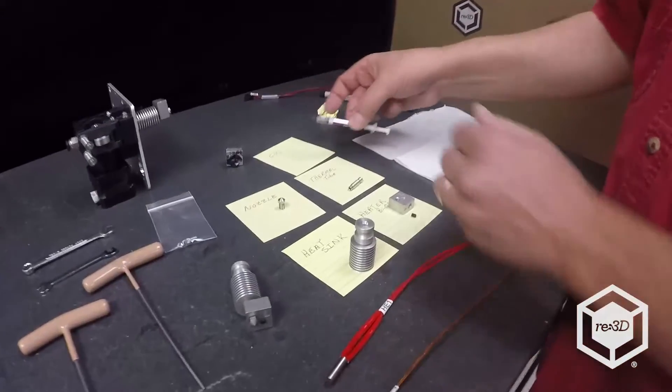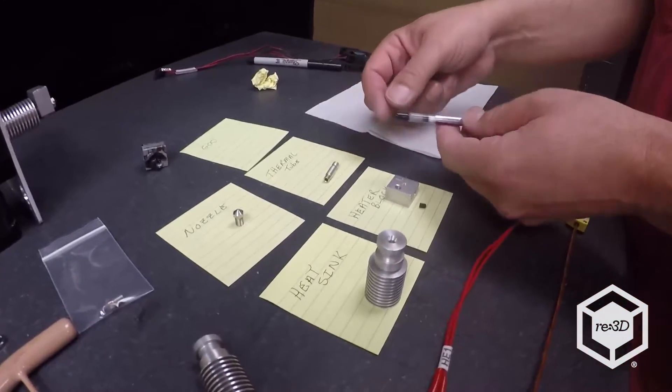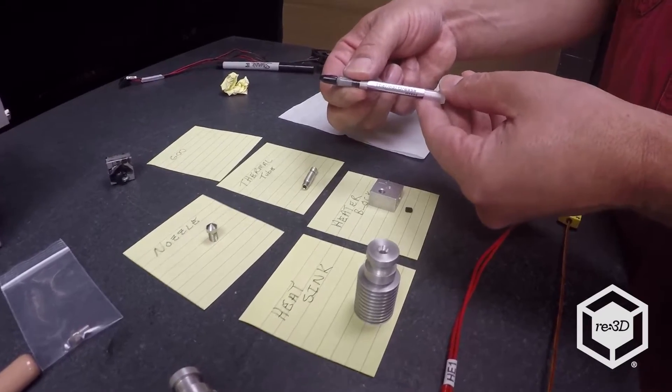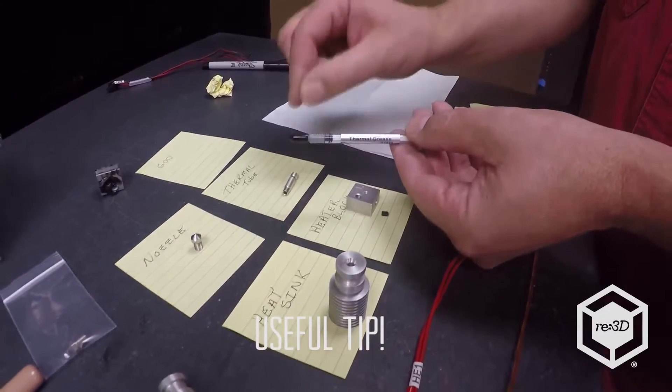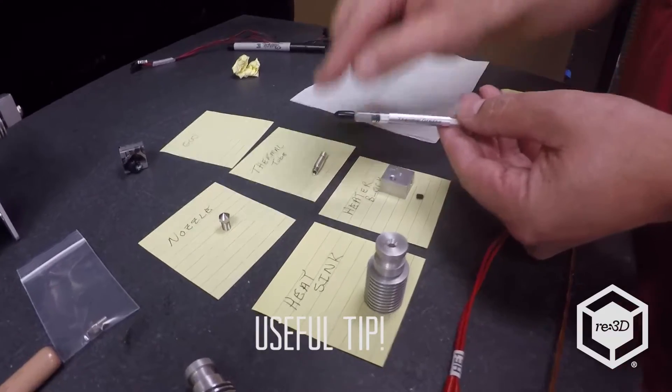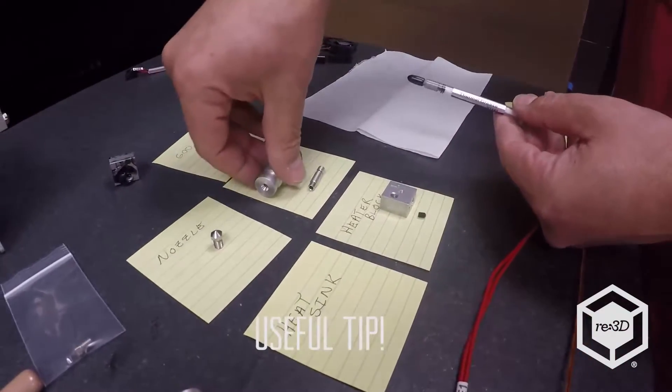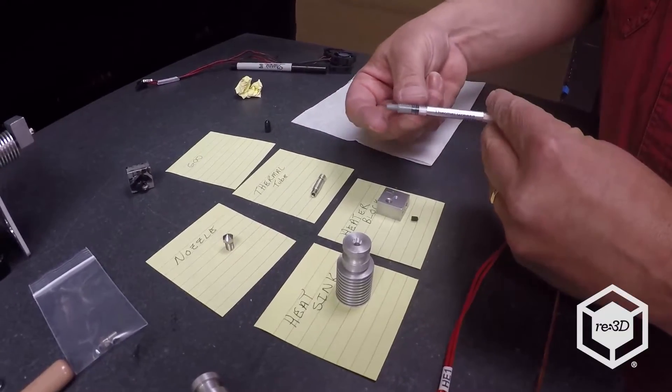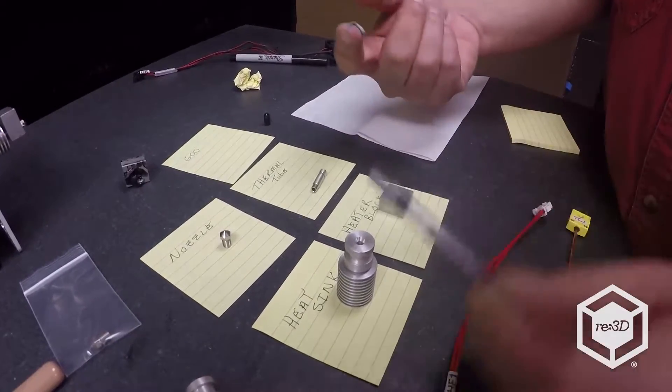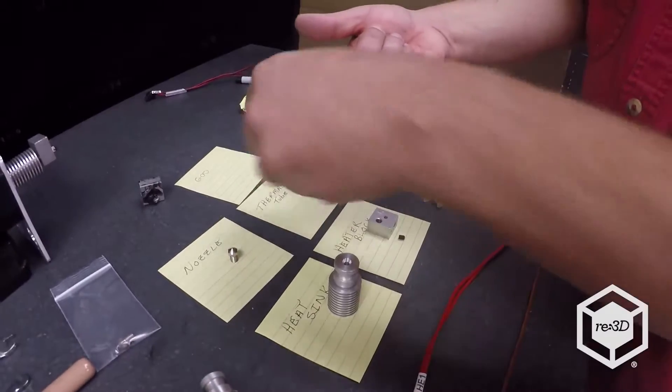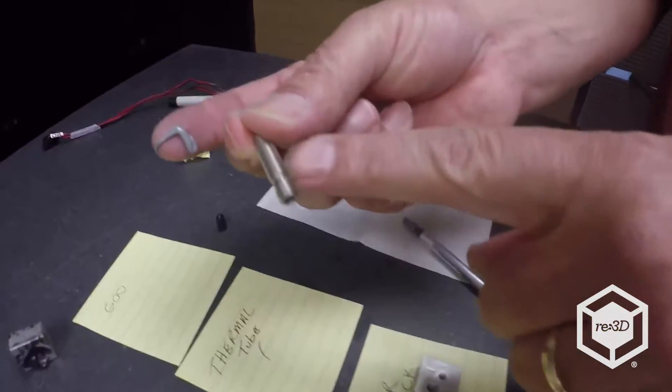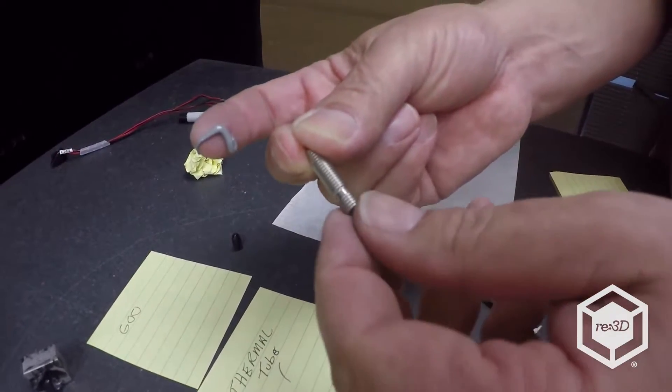So let's talk about how we assemble this. We start with the thermal tube and we're going to add thermal grease to it. What it does is it improves the heat connectivity between the thermal tube and the heat sink. So we actually do this in two steps. Take a little bit of thermal grease and you want it on just the threads that go into the heat sink, not the other threads.